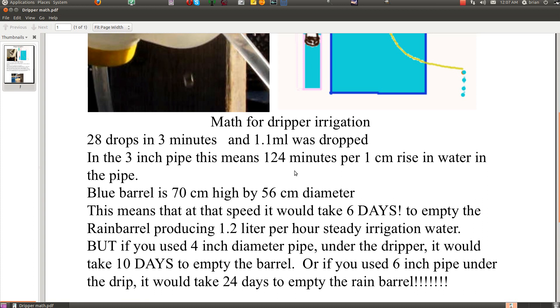So that means 2 hours, or just over 2 hours, would rise the level of water by 1 centimeter, which would lower the little pipe by 1 centimeter. The blue barrel is 70 centimeters high, so that means 70 by 2 hours - 140 hours it will take to lower the water to the bottom of the blue barrel.